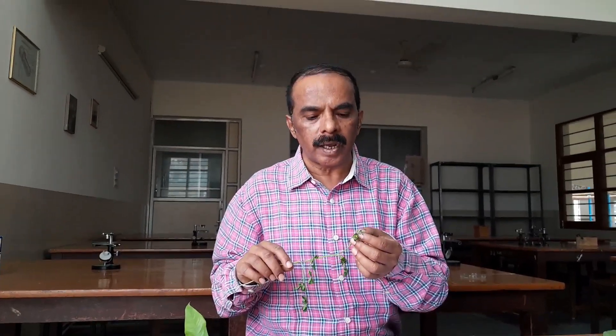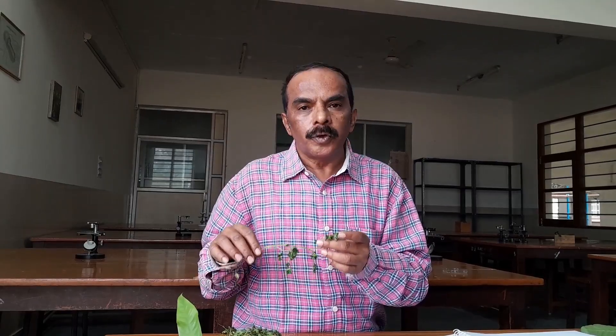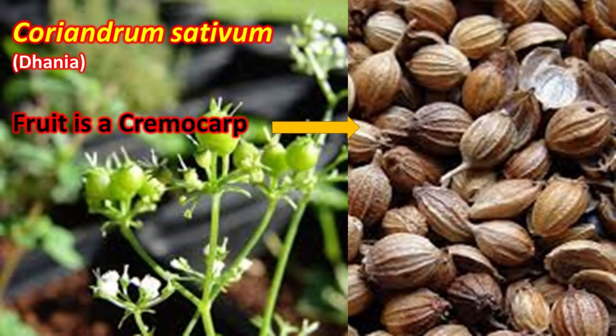The ovary is bicarpellary, syncarpous, bilocular, with one ovule in each locule. The fruit is actually a cremocarp — it is a dry schizocarpic fruit. It will break into two mericarps.